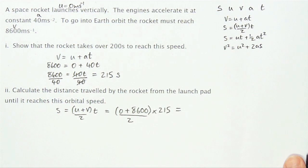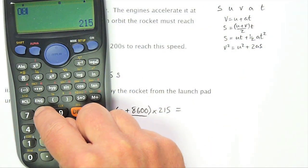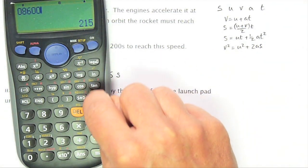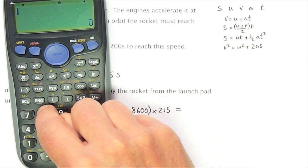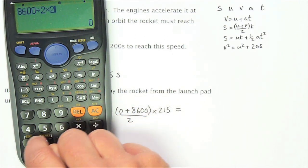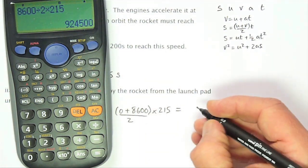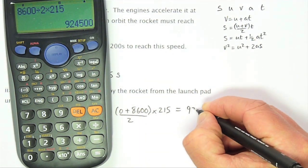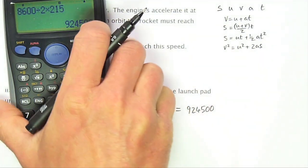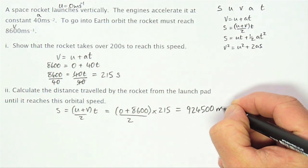And the answer to that one, 8600 divided by 2 and multiplied by 215. 9, 2, 4, 5, 0, 0. And that is the distance. So that will be in meters.